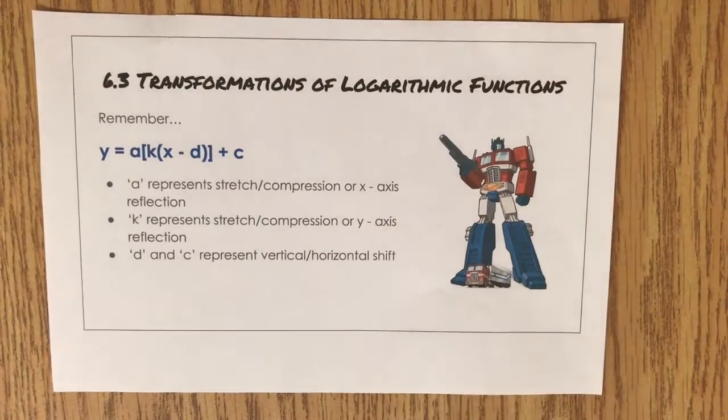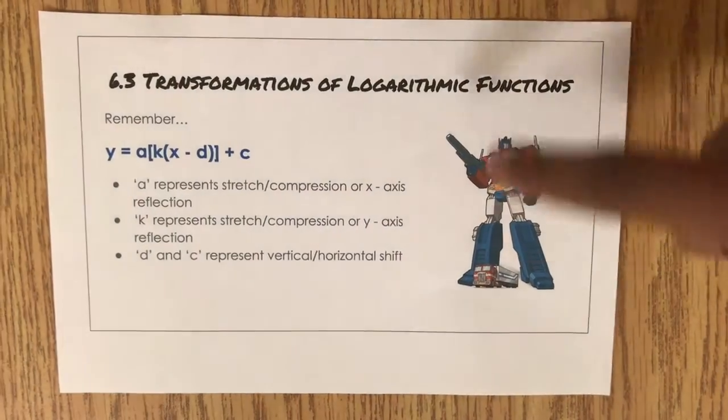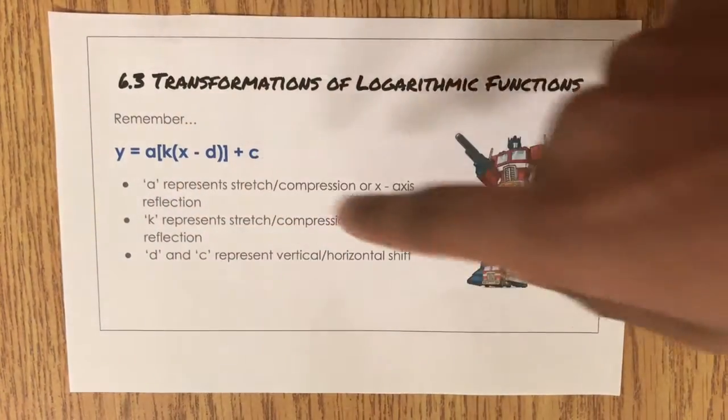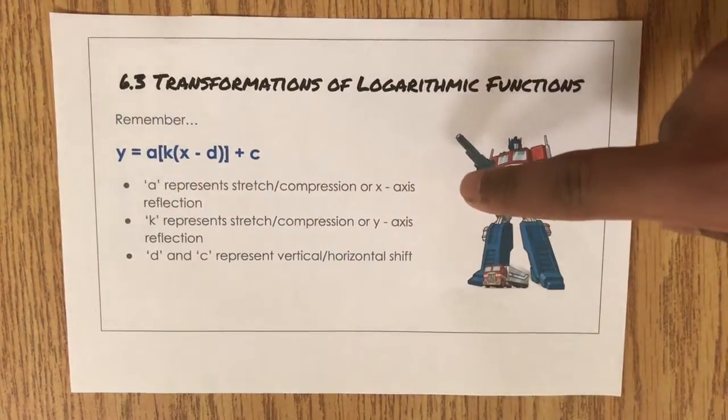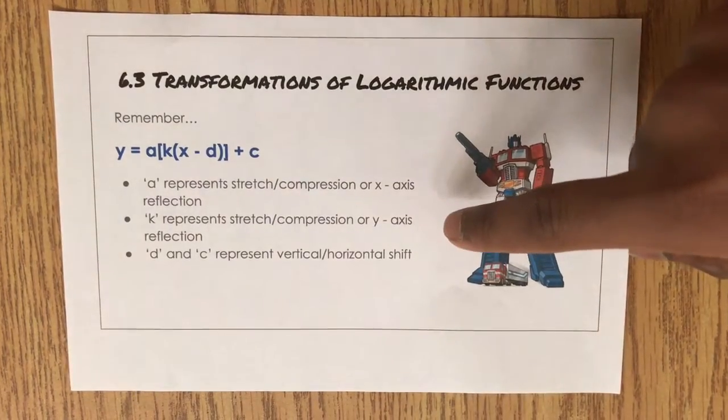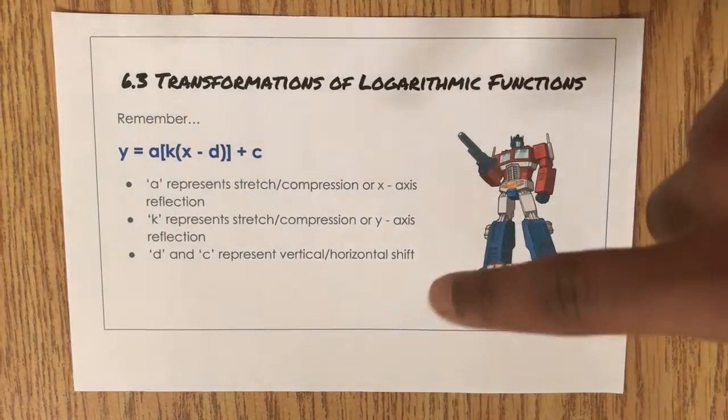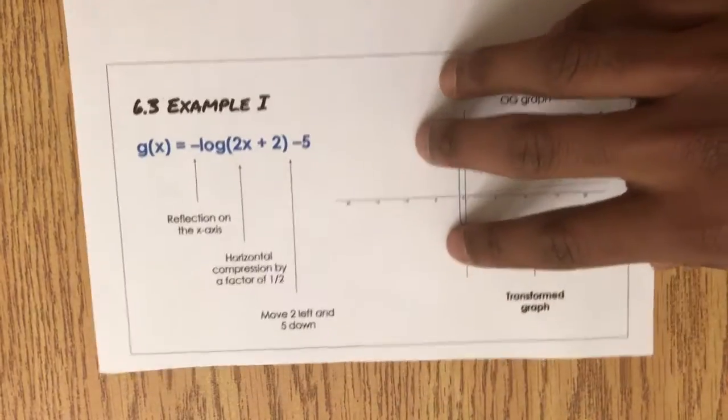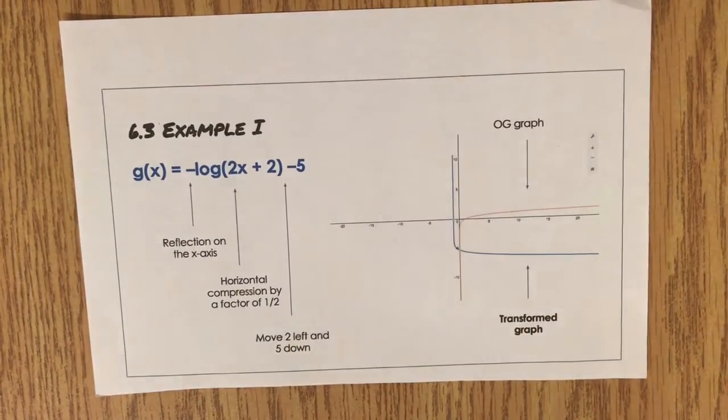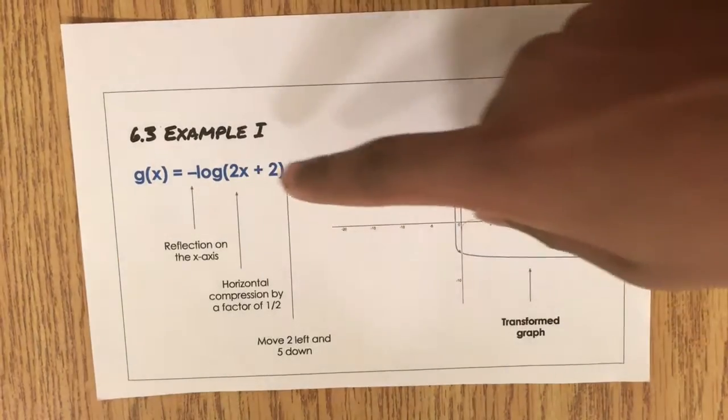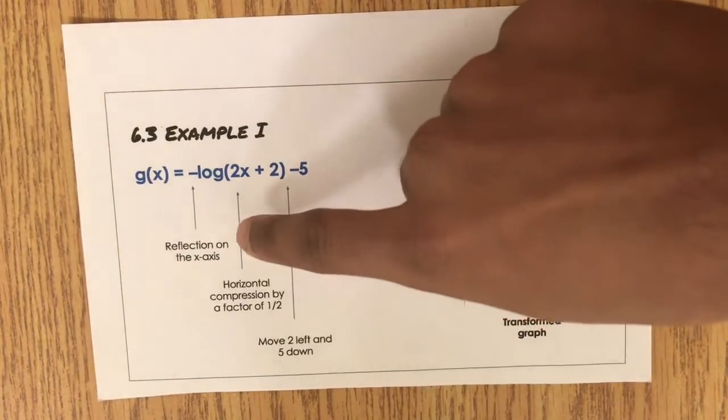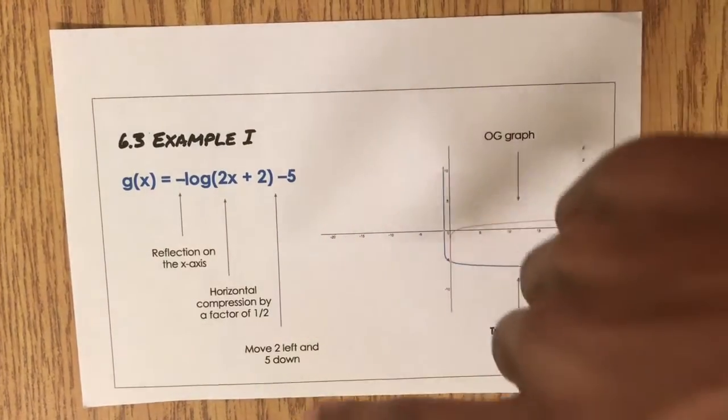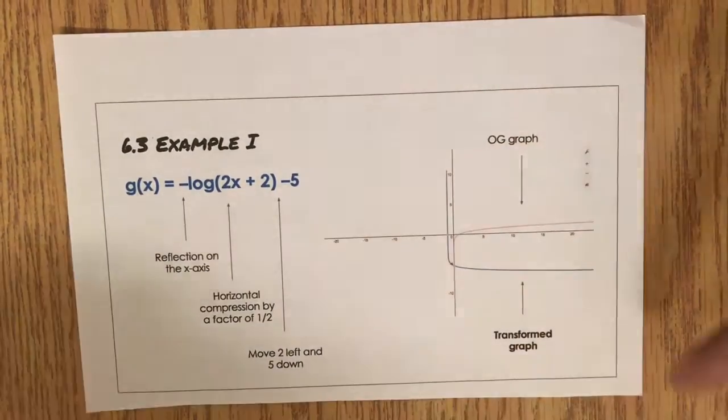Section 6.3 covers transformations of logarithmic functions, which is just a recall from previous math lessons, where A represents the vertical stretch or compression, K represents the horizontal stretch or compression, and D and C represent vertical and horizontal shifts. For example, g(x) equals negative log 2x plus 2 minus 5, which has a reflection on the x-axis, a horizontal compression by a factor of 1/2, and moves 2 units to the left and 5 units down.